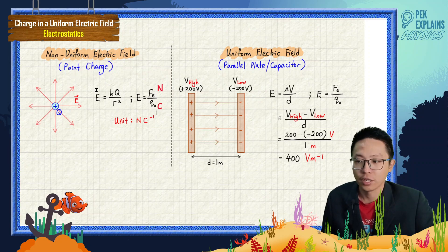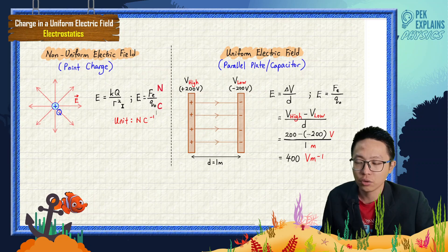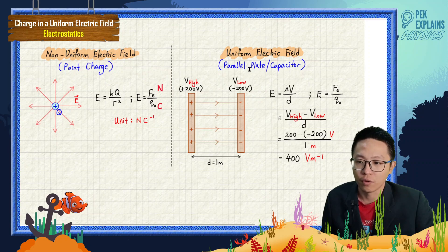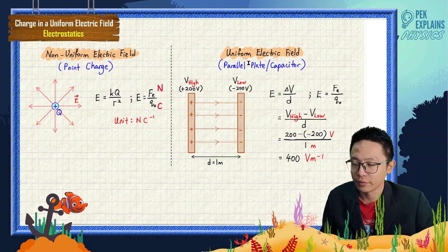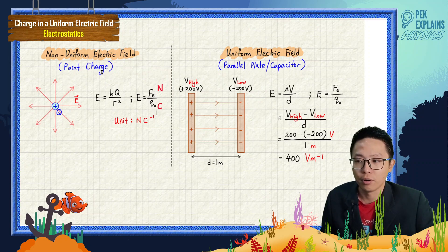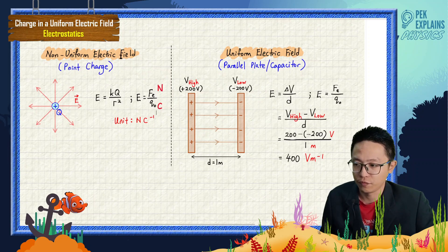Don't use kq over r squared for parallel plate — that is wrong. So kq over r squared is only for point charge, for a non-uniform electric field where the field strength is strong in some parts and weak in others.